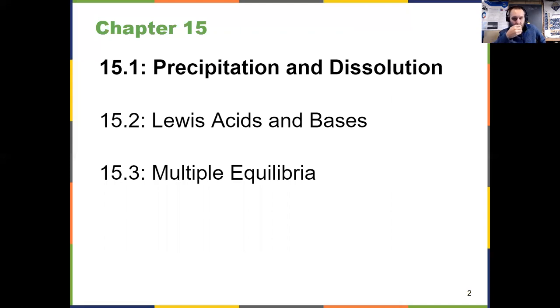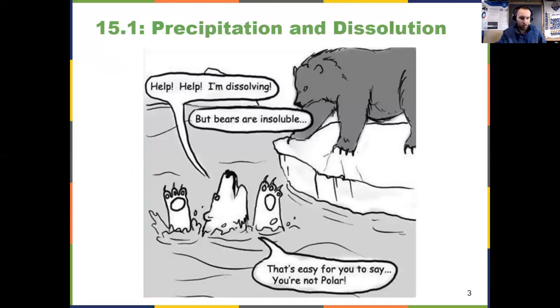To dive into 15.1, think about back when we first learned the Vant Hoff factor in Chapter 11. We discussed the fact that solubility isn't always clear cut. It's not always that something is either insoluble or completely soluble, or a weak electrolyte versus a strong electrolyte. Some of that stuff isn't always clear cut. And that's what 15.1 is all about.